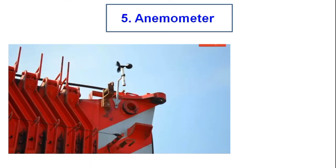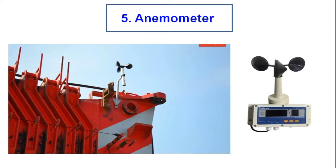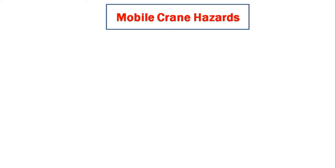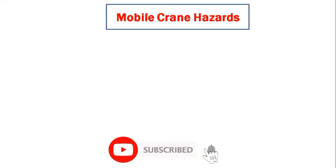The fifth safety device is the anemometer. The anemometer is used to determine safe wind speed operating conditions on mobile cranes, and cranes are prevented from operating in high wind speeds. This covers all safety devices in mobile cranes.